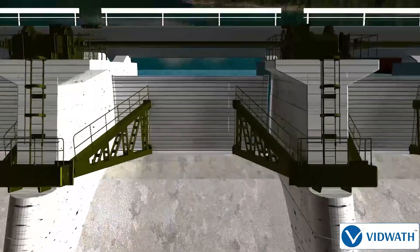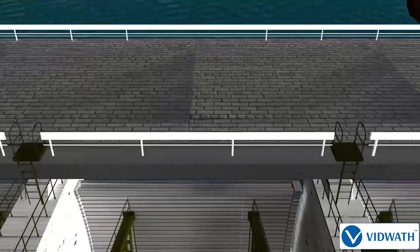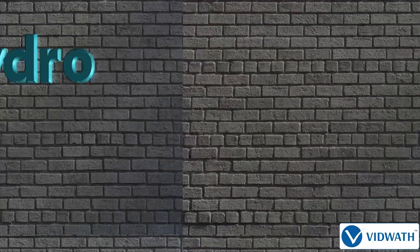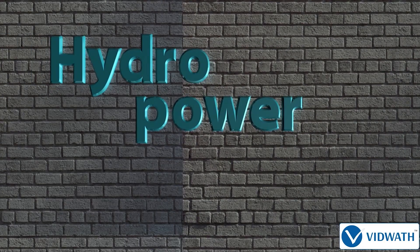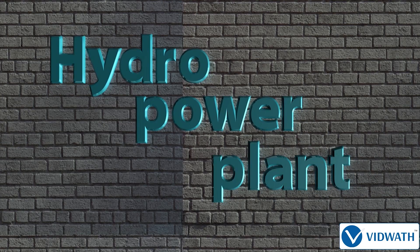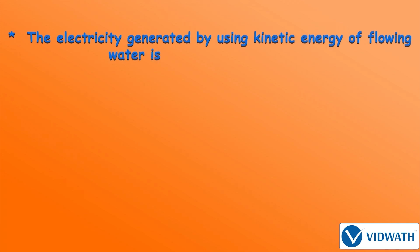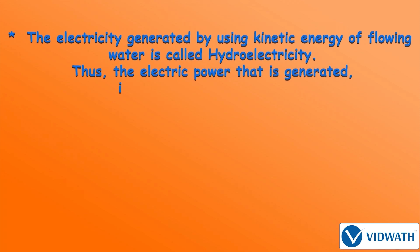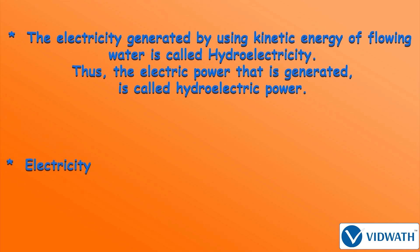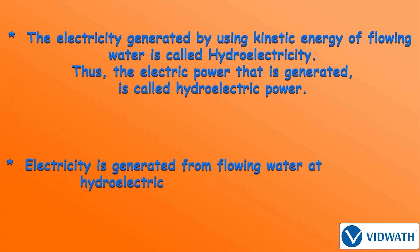Sources of Energy, Concept 3: Hydro Power Plant. The electricity generated by using kinetic energy of flowing water is called hydroelectricity. The electric power that is generated is called hydroelectric power. Electricity is generated from flowing water at a hydroelectric power plant.